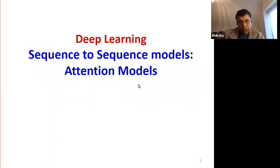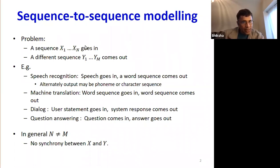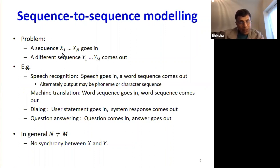Here's the problem we began with: the sequence-to-sequence modeling problem. Some sequence x1 through xN goes in, and a different sequence y1 through yN comes out — like in speech recognition, where speech frames go in and text comes out; machine translation, where English goes in and French comes out; or dialogue, where a user's question goes in and a response comes out. The number of output symbols doesn't have to equal the number of input symbols.